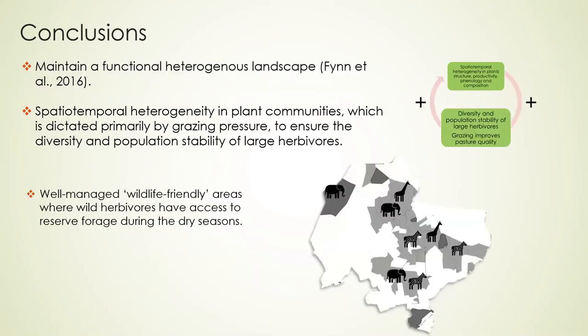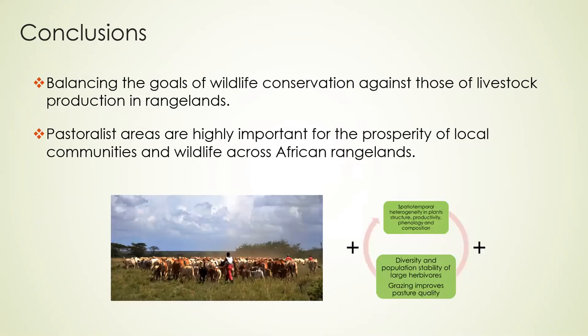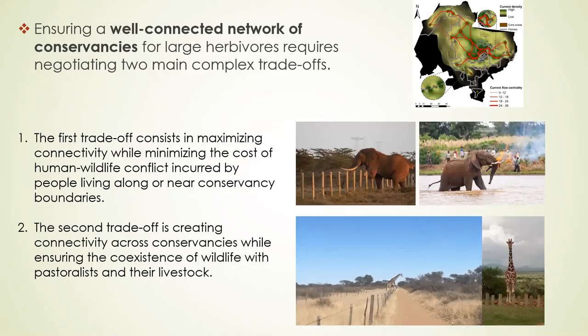To maintain a functional heterogeneous landscape, we need wildlife-friendly areas where large herbivores have access to forage during different seasons. Most wild animals move between ranches based on seasons, some going as far as Solio and other areas for grazing. Balancing the goals of conservation against those of livestock production is key. Maintaining pastoralist areas not only supports local communities but also supports the rangelands that sustain wildlife.